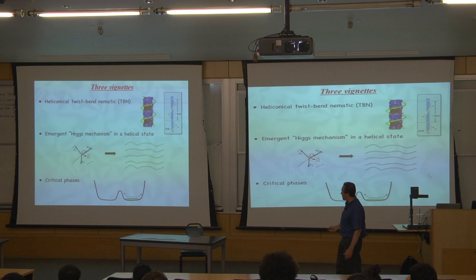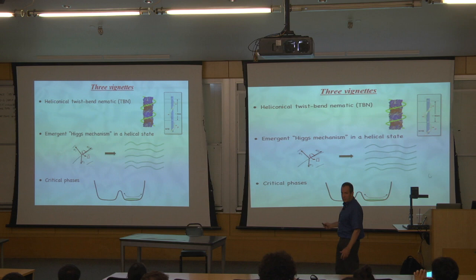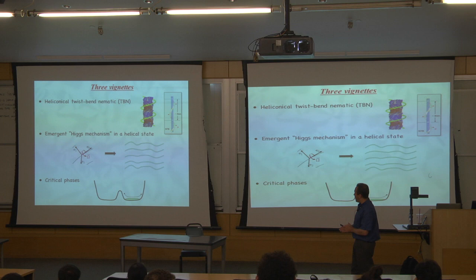The second vignette is about what I call an emergent Higgs mechanism. It's a general phenomenon that occurs in many contexts, but in particular I can tie it to this particular phase. There's some kind of emergent Higgs mechanism that happens in this phase. It sounds really highfalutin and scary, but you will see it's not — it's going to be very simple the way I explain it.